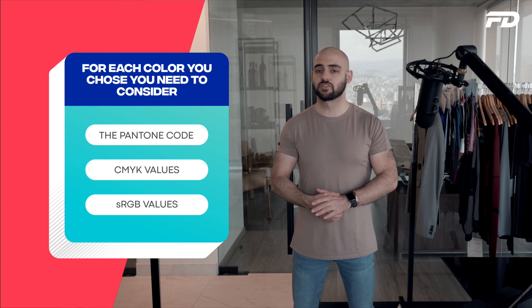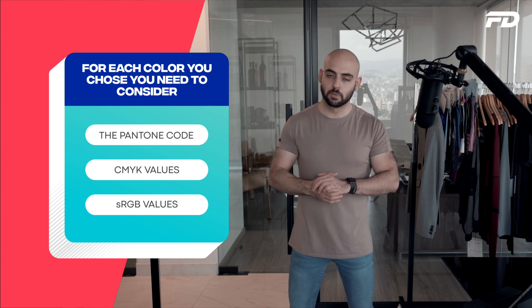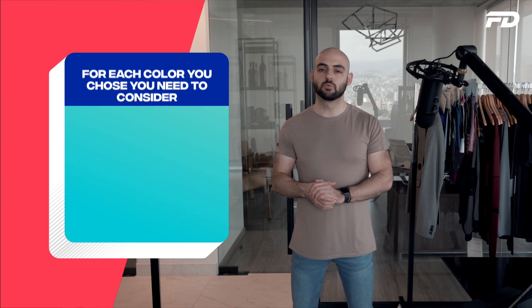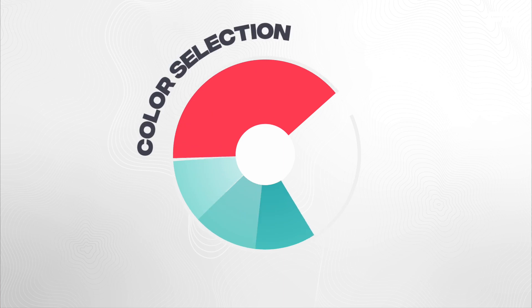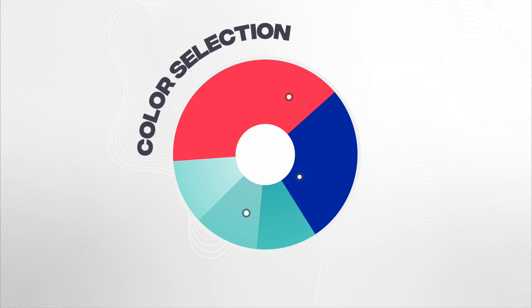The same applies to your secondary colors. You'll also want to keep your color proportions in mind — getting the right proportions is key to creating a balanced and effective brand. For example, you could say: primary color 1 is 40%, primary color 2 is 30%, and each of three secondary colors is 10%, when composing the total color proportions of the brand.